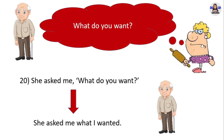Next example: 'What do you want?' She asked me 'What do you want?' in direct speech. In reported speech, she asked me what I wanted. 'What do you want?' is a WH question — we always use the WH word before the reported question. 'Do want' in present simple changes into 'wanted' in past simple. Pronoun 'you' changes into pronoun 'I.'